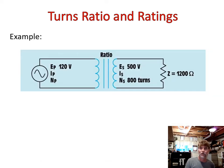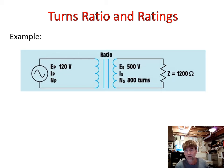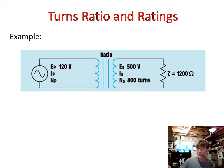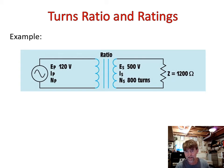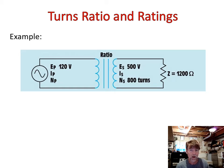Let's give it a try. We're told the primary voltage is 120 volts and the secondary voltage is 500 volts. Z equals 1,200 ohms — that's the impedance, which for now we can treat as a resistance in ohms. We've also been told the secondary turns, though we still need to figure out the turns ratio. We don't know any current values yet.